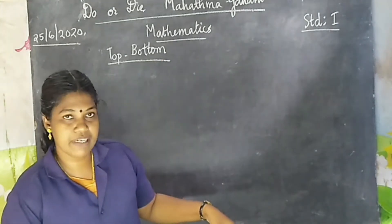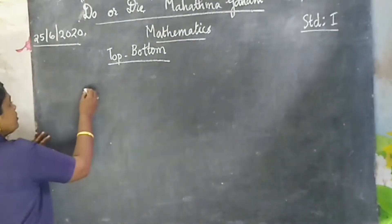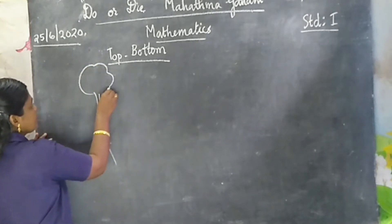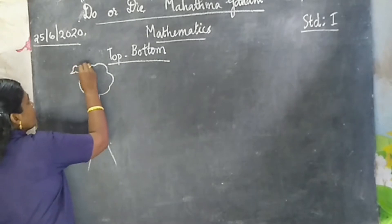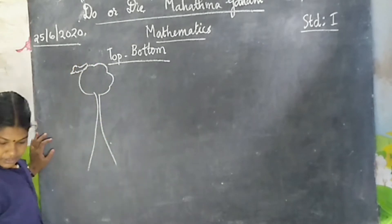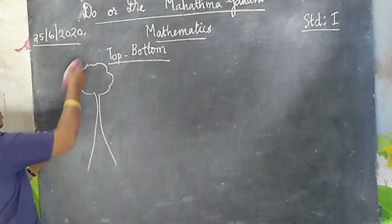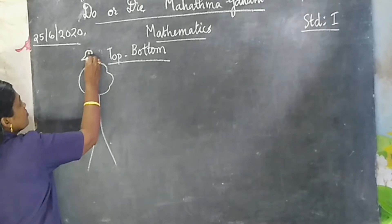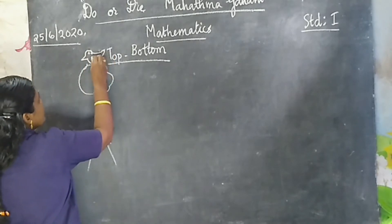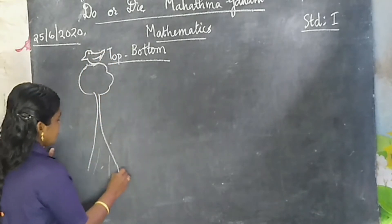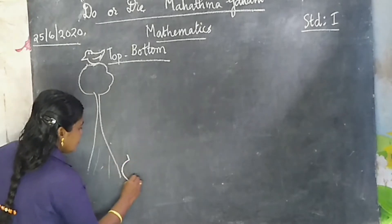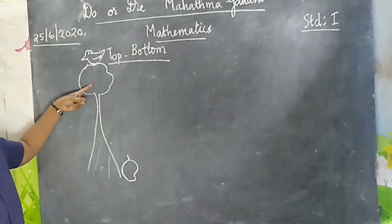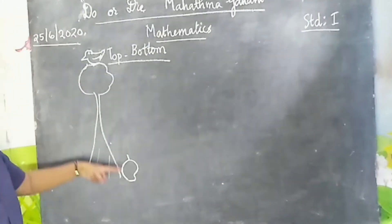We can see some examples. Here is a tree, a bird, and a mango.